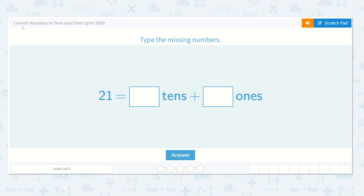Let's look at the next lesson. Convert numbers to tens and ones up to 1,000. It says, type the missing numbers.